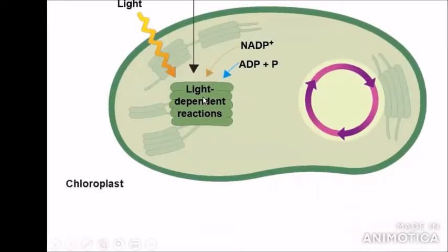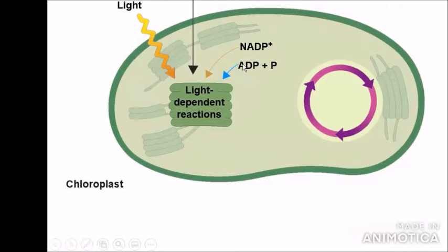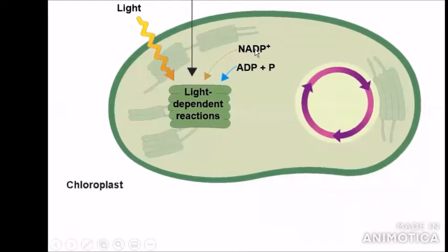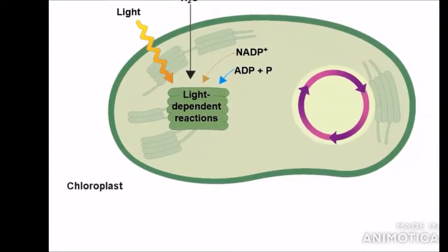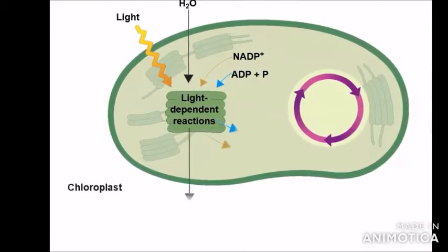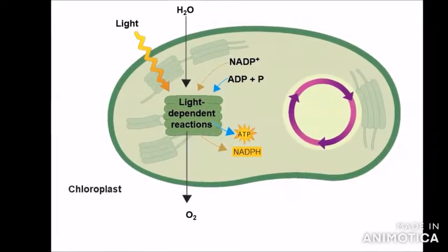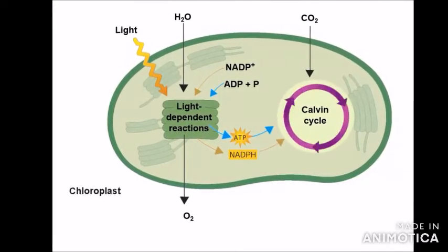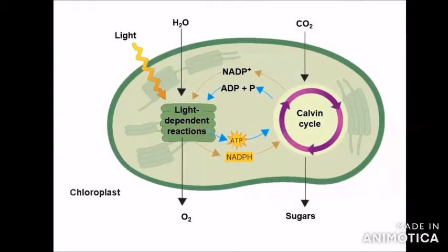For the light-dependent reaction, ADP and NADP+ are important because ADP is phosphorylated to form ATP, and NADP+ takes up a hydrogen electron — meaning NADP+ is reduced into NADPH. ADP is phosphorylated into ATP and oxygen is produced as a byproduct. Then the Calvin cycle occurs inside the stroma, where sugars are made.